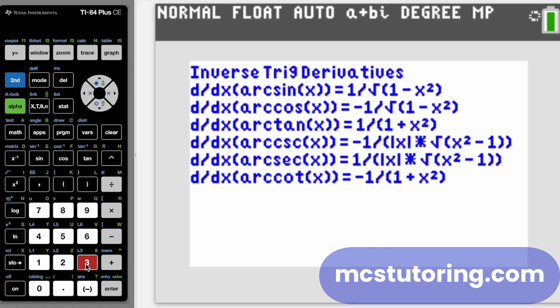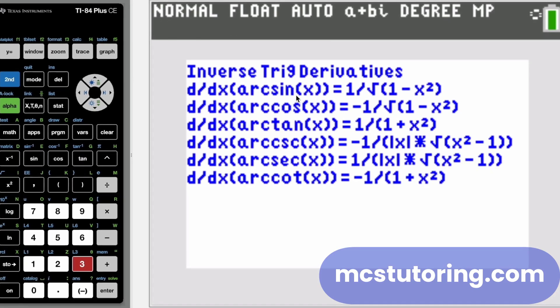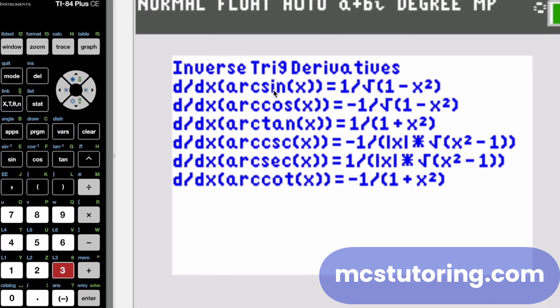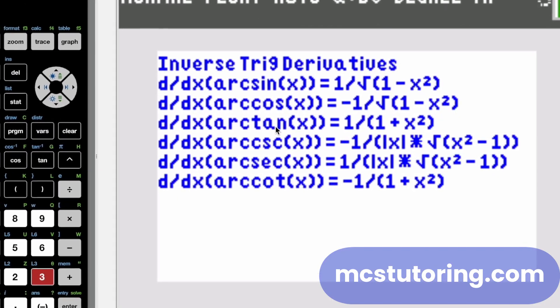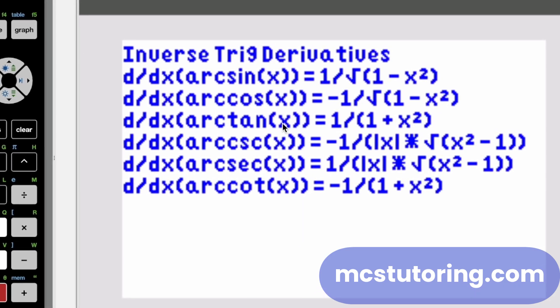And then we also have inverse trig derivatives. Now, by the way, this is old school, like arc sine. I know you kids nowadays call it inverse sine, inverse cosine, inverse tangent, but don't worry. It's called inverse trig derivatives in sections. So I'm sure you can figure it out.